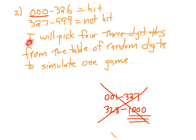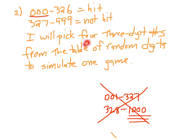I'll pick four three-digit numbers from the table of random digits — you could also use a calculator. The 'four' comes from the fact that he gets four at bats every game. Each set of four three-digit numbers will simulate one game.